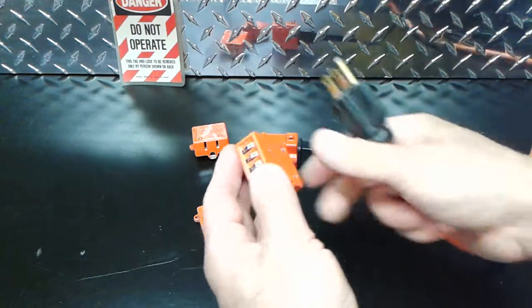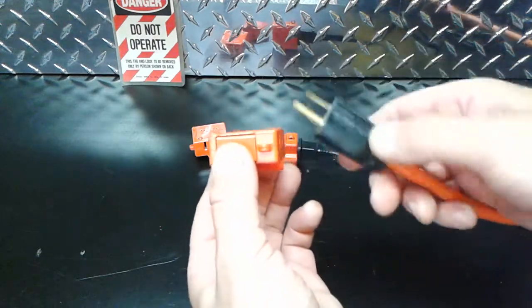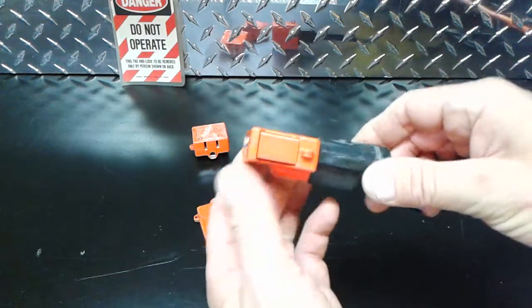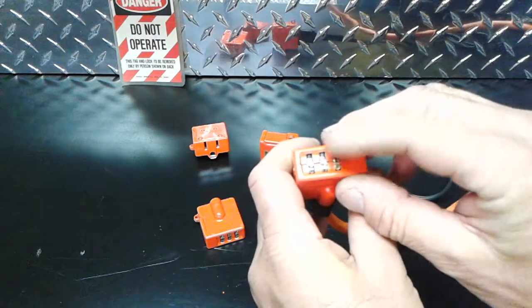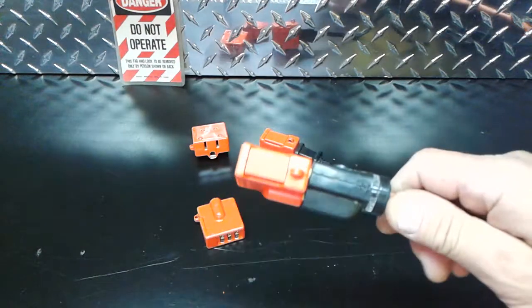What you do is you dial in the correct combination. There's a release button here. You press the button, insert the plug, let go, scramble the combination, and now the button's locked and you can't remove the plug.